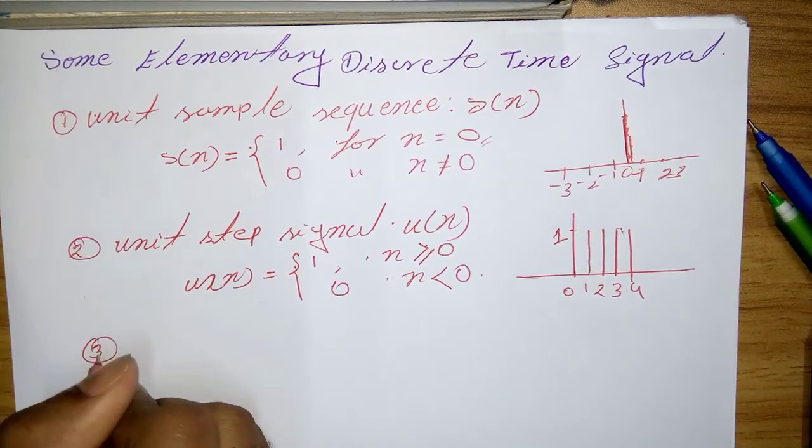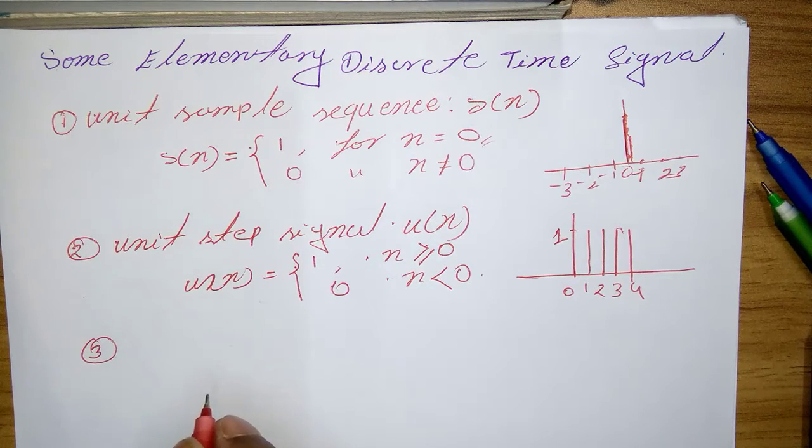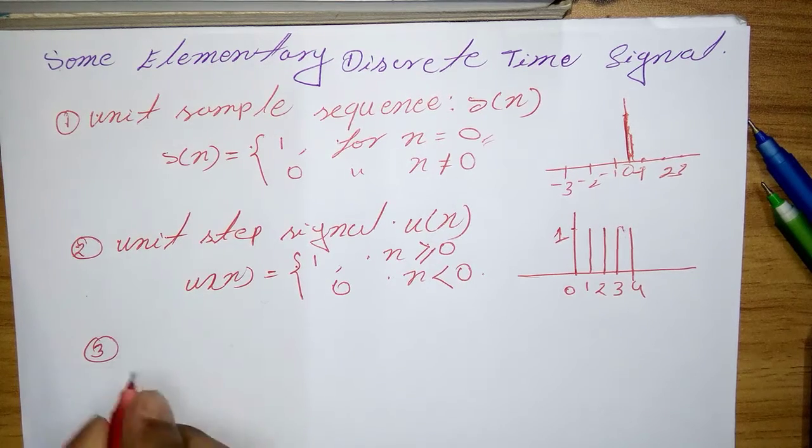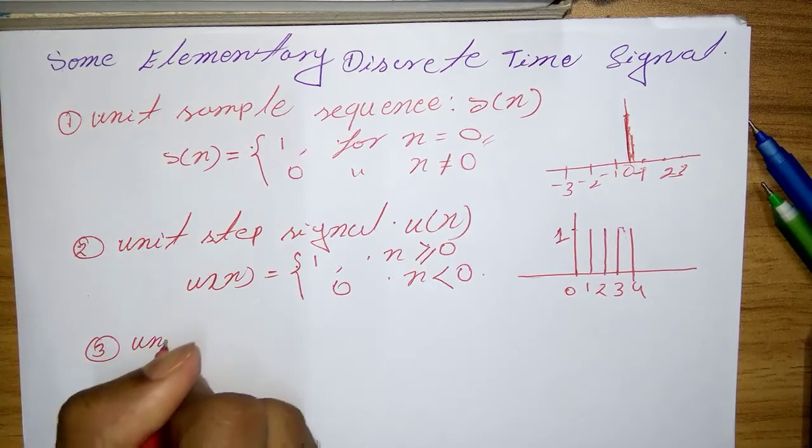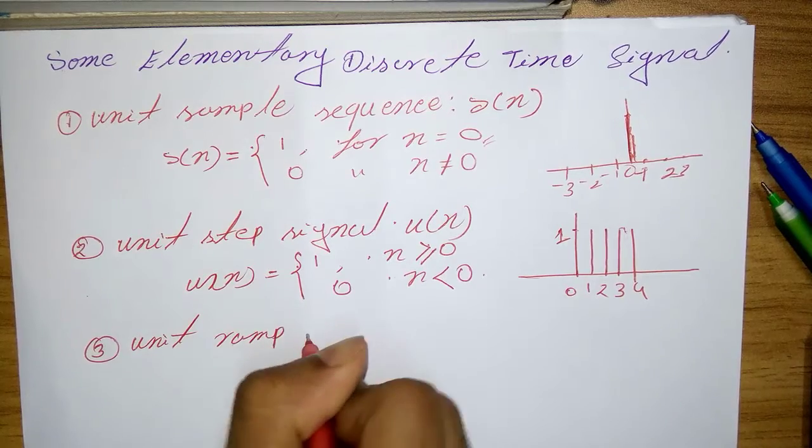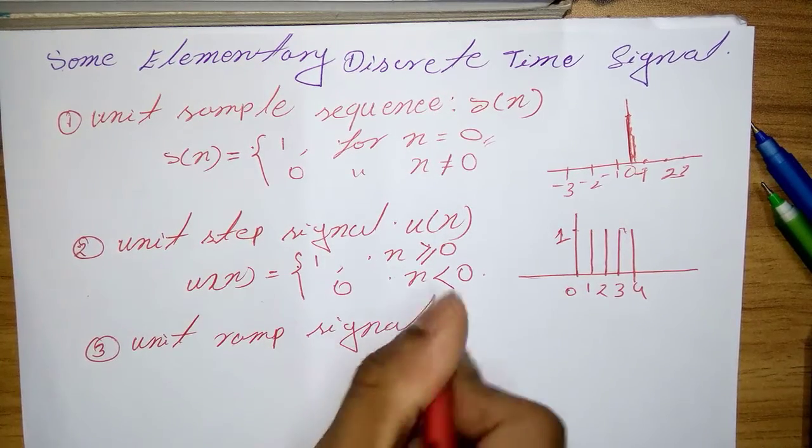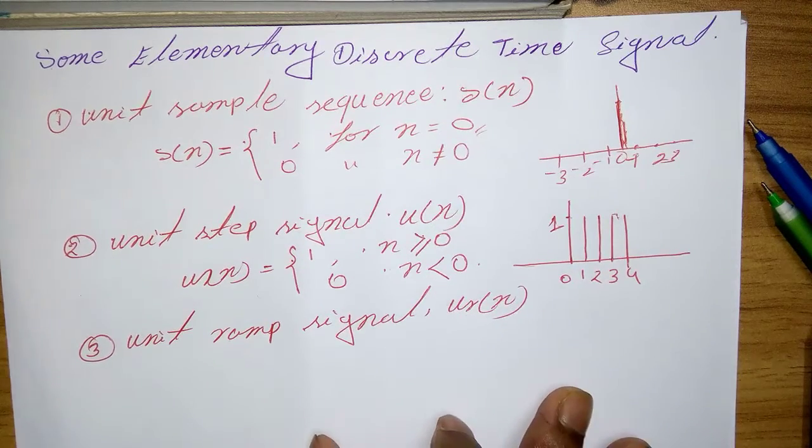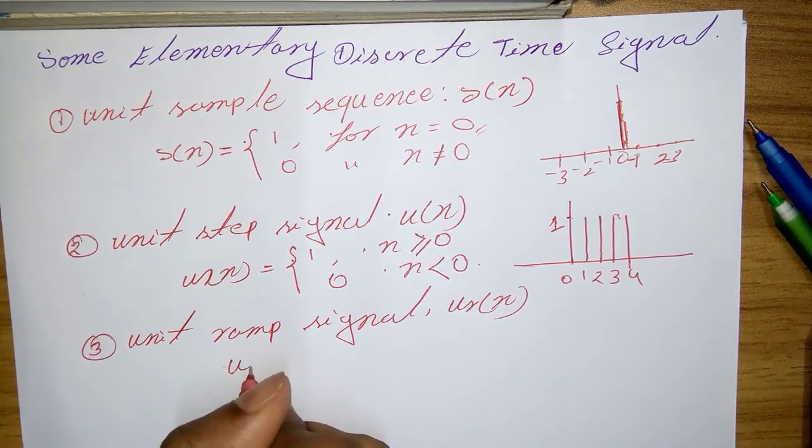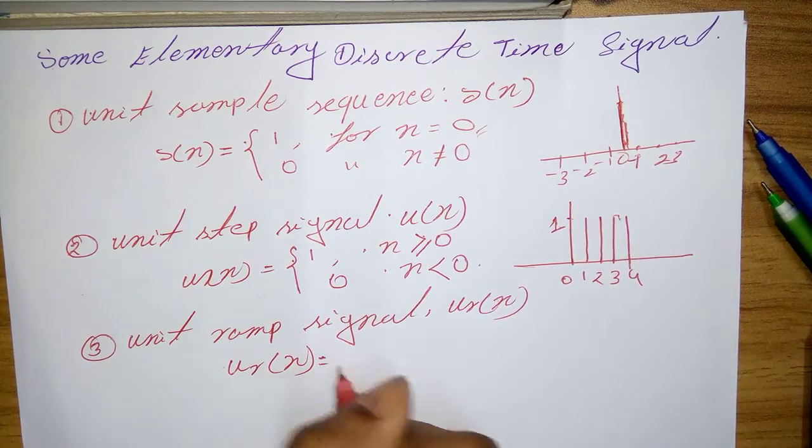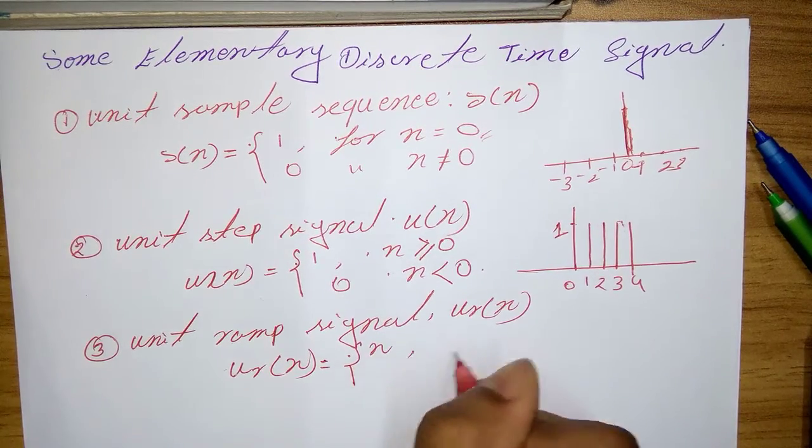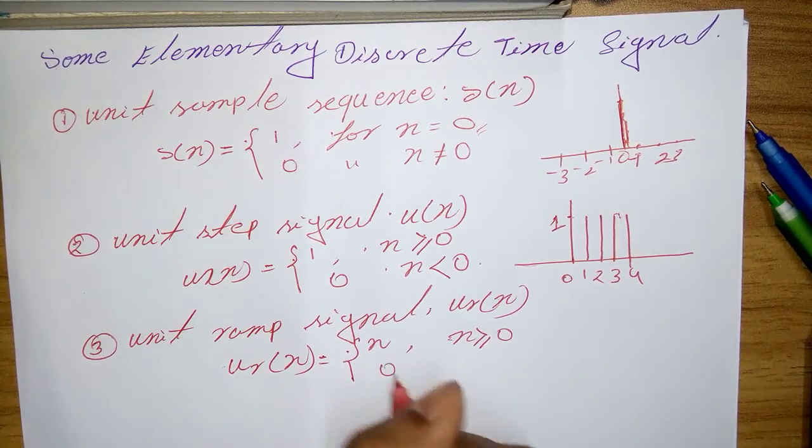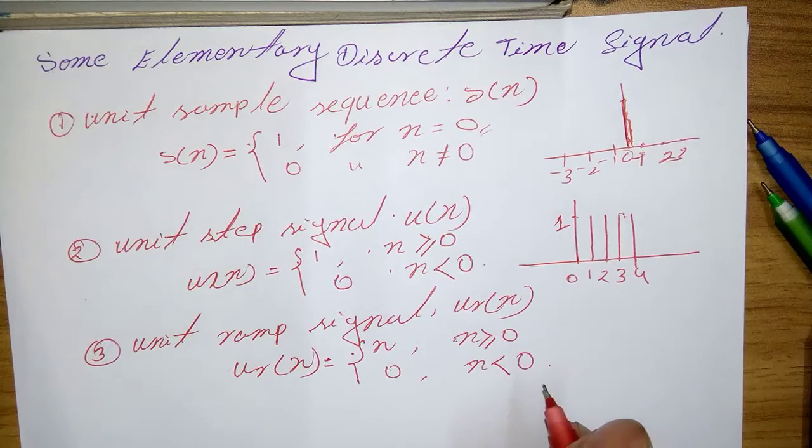And next one is the unit ramp signal, which is denoted by u r of n. So the equation is: u r of n equal n when n is greater than or equal 0, and 0 when n is less than 0.